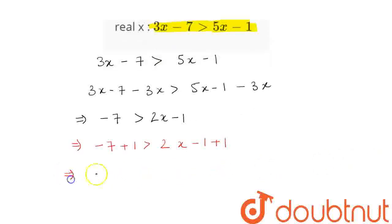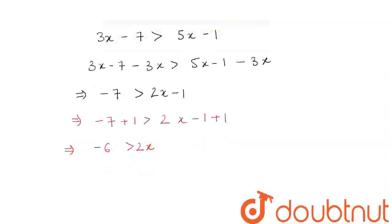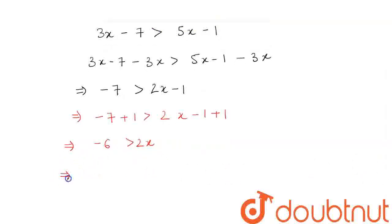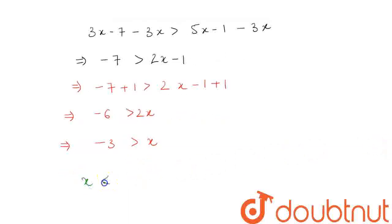So, this gives us minus 6 is greater than 2x. Now, if we divide the whole equation by 2, we will get minus 3 is greater than x. So, we have found the value of x to be less than minus 3, and this is our required answer.